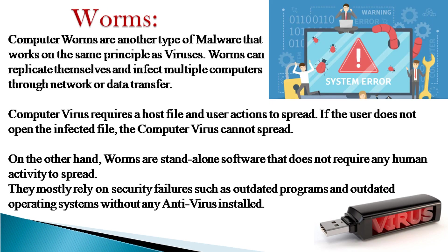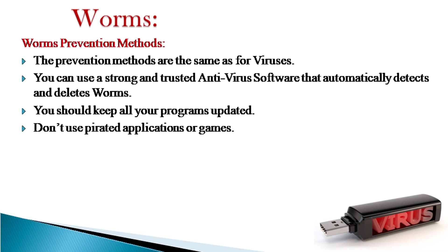Computer worms are another type of malware that works on the same principle as viruses. Worms can replicate themselves and infect multiple computers through a network or data transfer. A computer virus requires a host file and user actions to spread — if the user does not open the infected file, the virus cannot spread. On the other hand, worms are stand-alone software that does not require any human activity to spread; they mostly rely on security failures. Prevention methods for worms are the same as for viruses: use strong trusted antivirus software, keep all programs updated, and don't use pirated applications or games.